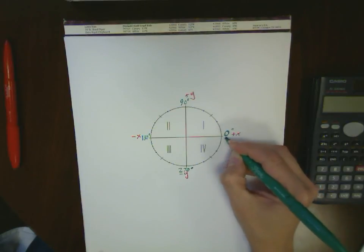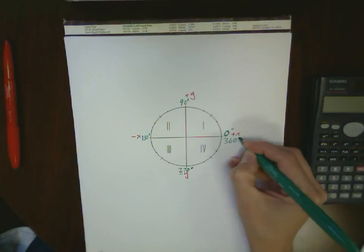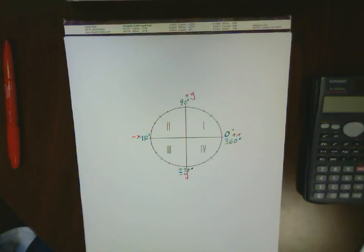So if you're given an angle, you should be able to figure out which quadrant it's in based on its angle. If you're given x and y values, use the positive and negatives on those x and y values to figure out what quadrant you're in.